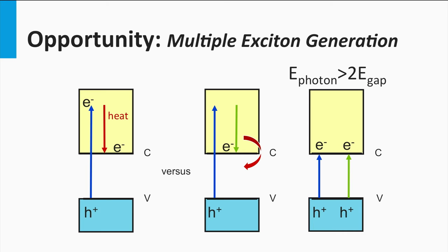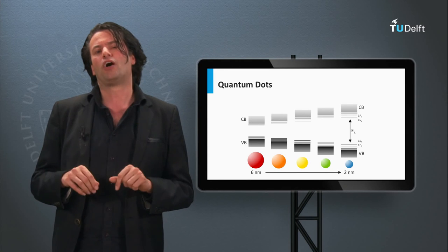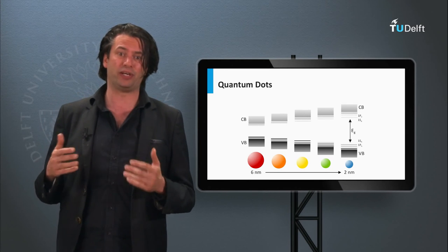It means that the energy in one photon results in two excited electrons. The requirement is that the energy in the initial photon is at least two times that of the bandgap energy. In this way, theoretical EQEs of 200% can be achieved. If you would have a photon with an energy larger than three times the bandgap, a theoretical EQE of 300% could be achieved.